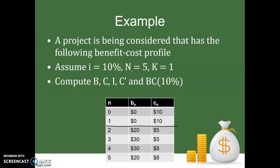We have an interest rate of 10 percent, N equals five — that's the lifespan of the project — and K equals one, meaning it's not until the end of year one that we start actually experiencing some benefits. We want to know: what is the total benefit, what is the total cost broken down into initial investment and annual operating costs, and what is the benefit-cost ratio using a 10 percent rate?